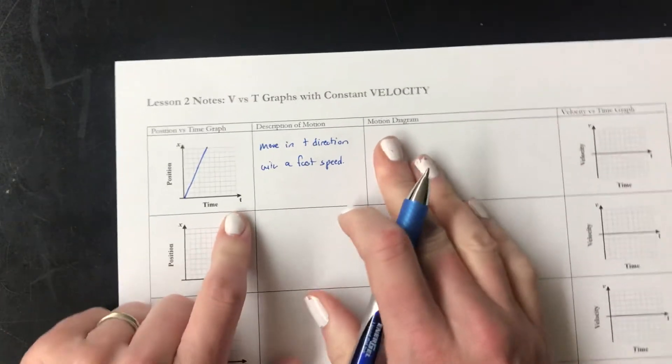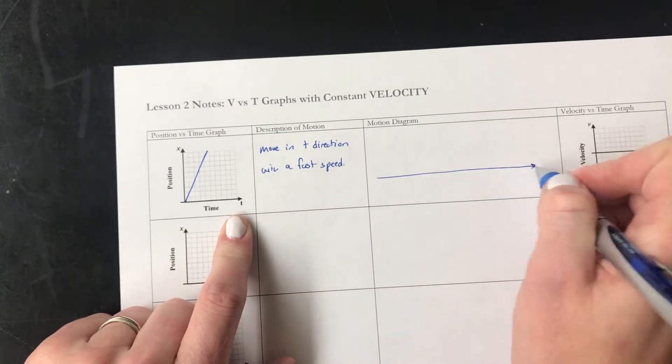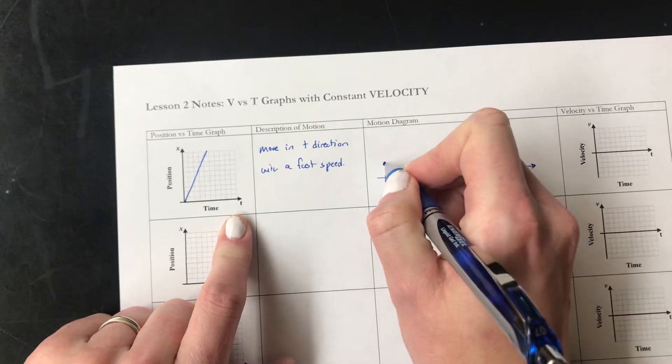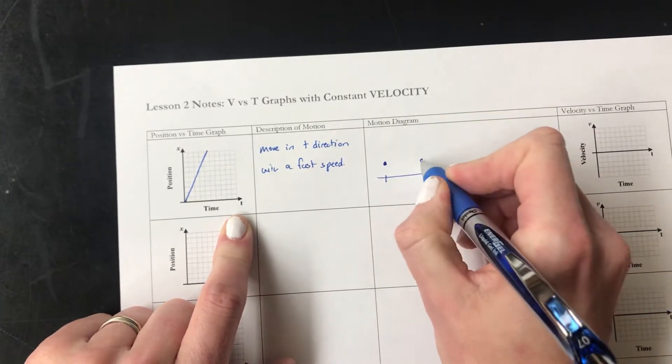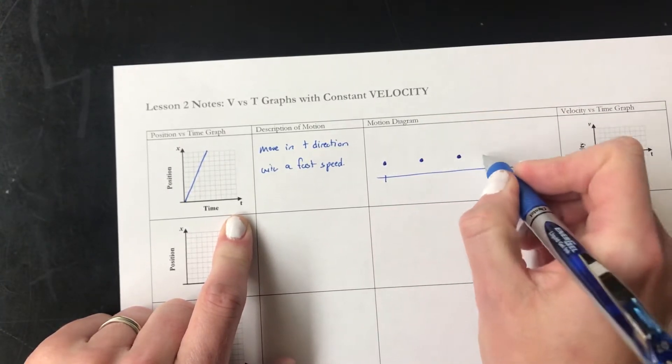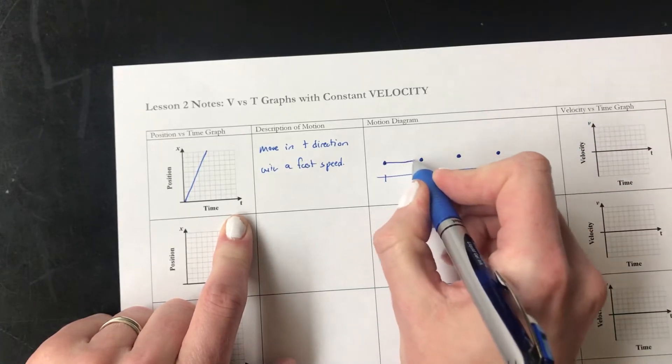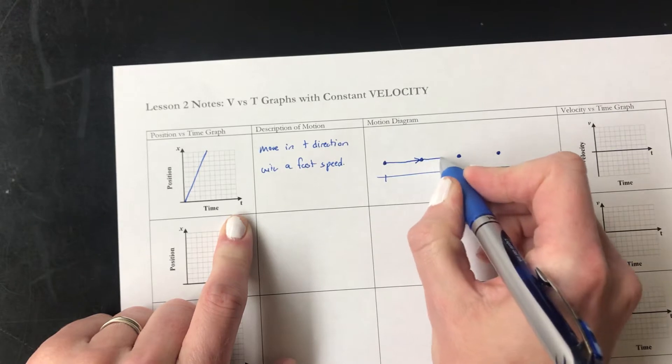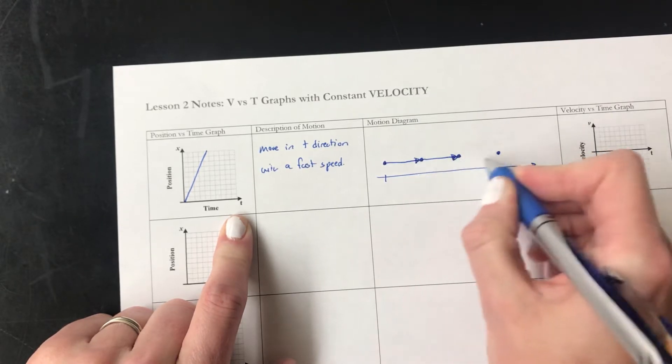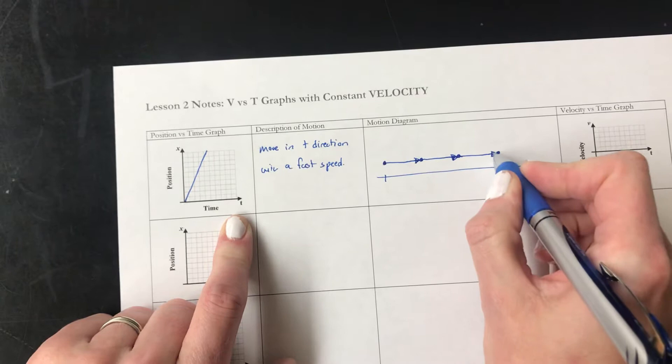And the motion diagram for that, remember that because it is moving fast, our dots are far apart. Because it's constant velocity, they're evenly spaced. And because it's constant, our arrows are all the same length, much like that.